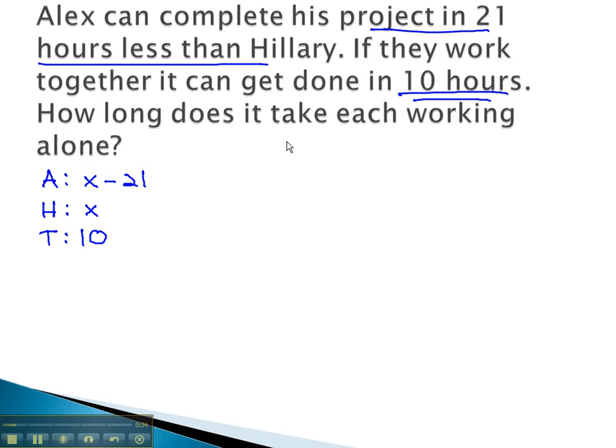We can now set up an equation using the reciprocals of the individuals equaling the reciprocal of the team. Alex's reciprocal is 1 over x minus 21, plus Hillary's reciprocal of 1 over x equals the team's reciprocal of 1 over 10.